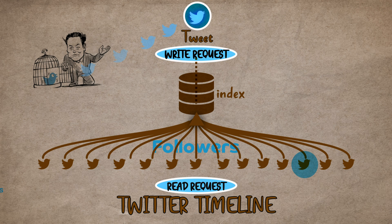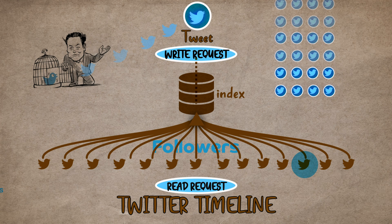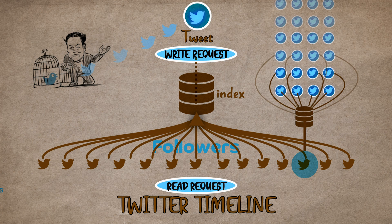Imagine a person following 1,000 users. They open Twitter and the backend hits the database with a query like: get all tweets ordered by time if they belong to any of these 1,000 users. Even if we limit the query to a few tweets, given the number of users, this is still going to put a heavy load on the database. So Twitter came up with a system that can serve the home timeline of users better.